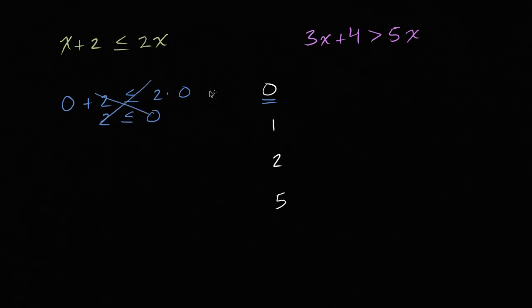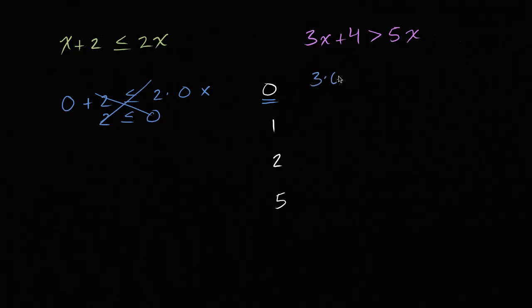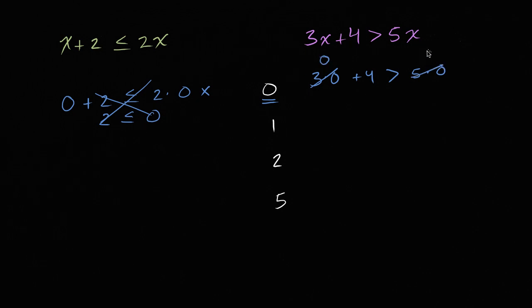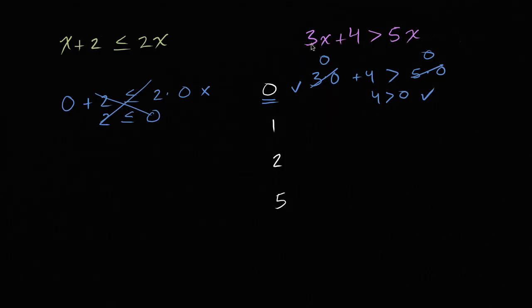So zero does not satisfy the left-hand side inequality. Let's see if it satisfies this inequality right over here. In order to satisfy it, three times zero plus four needs to be greater than five times zero. Well, three times zero is zero and five times zero is zero. So four needs to be greater than zero, which is true. So zero does satisfy this inequality.